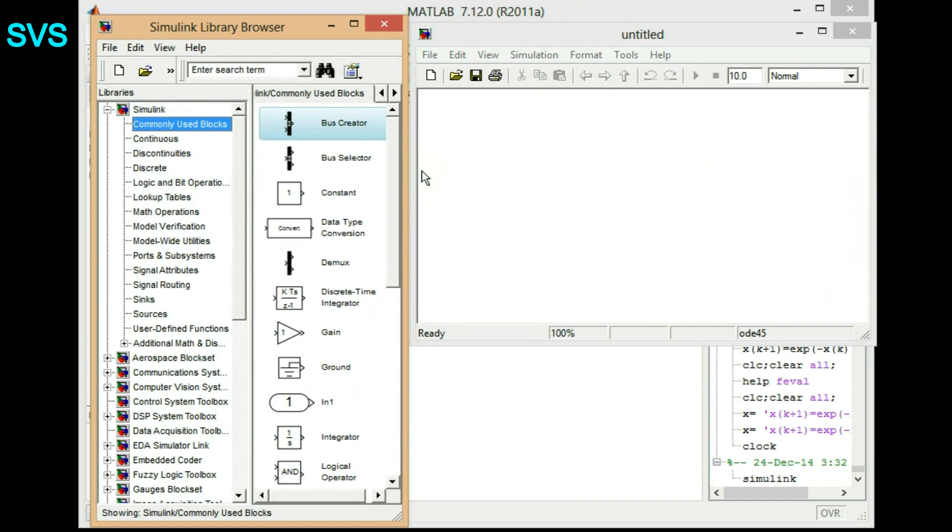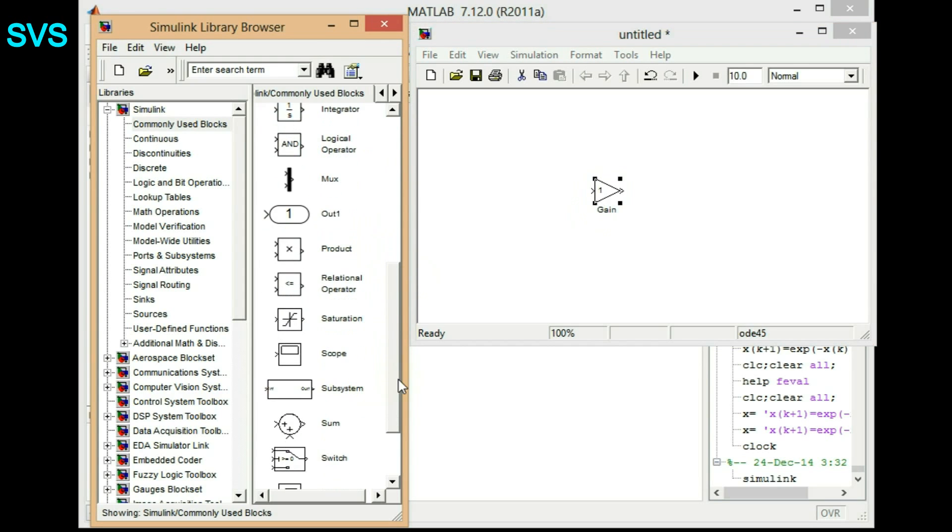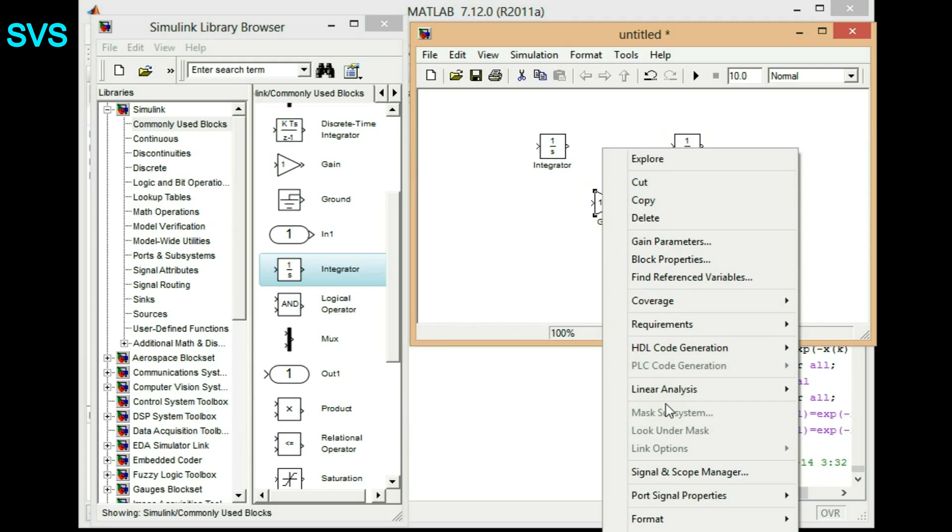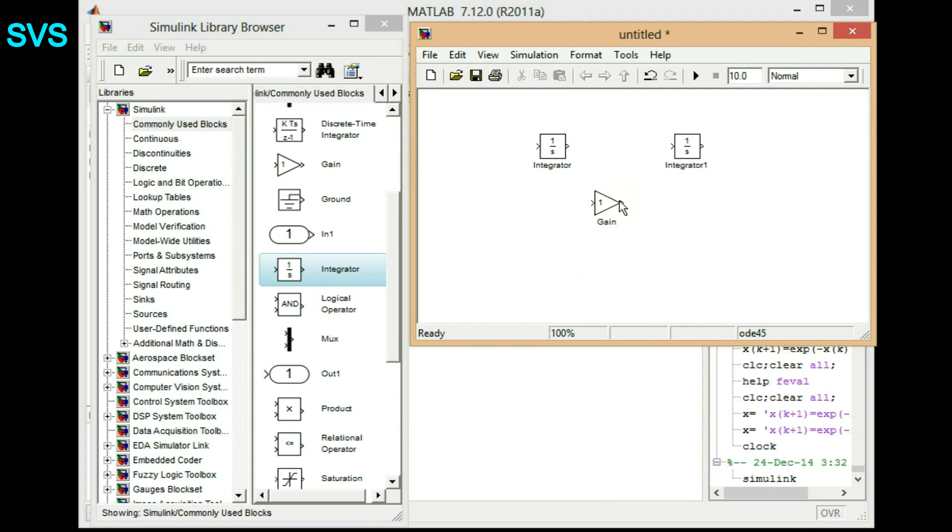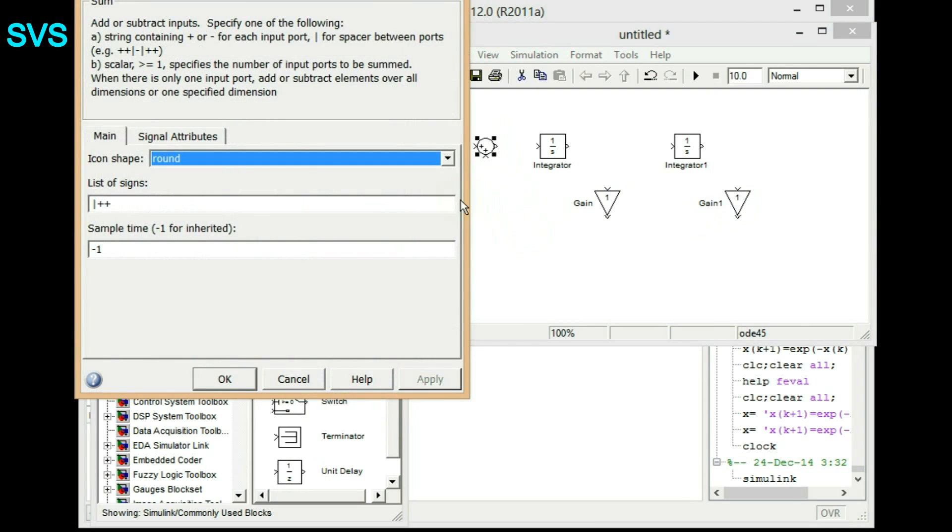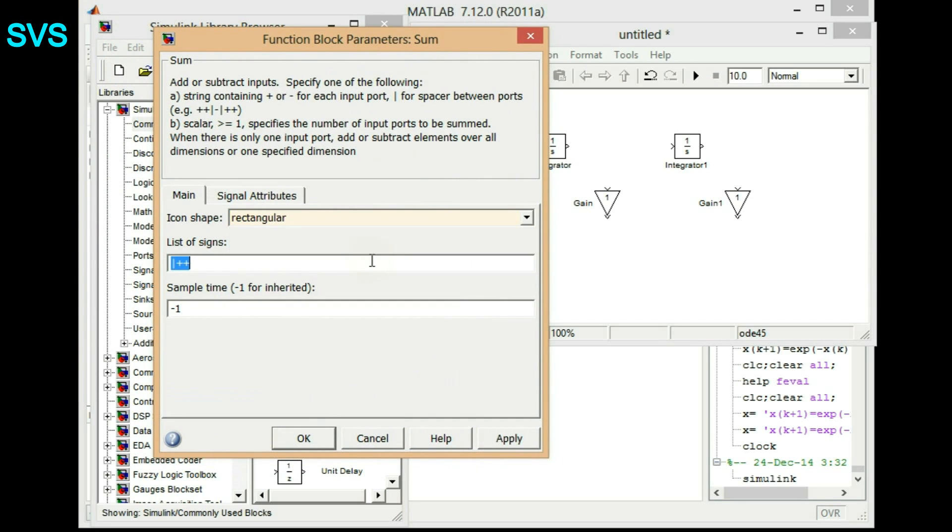So we'll serve on to two gain and two integrators. First integrator and the second integrator, and we'll just rotate it using Ctrl+R and we'll just right-click and drag it. We'll have multiple copies and then we'll choose gain because we want x2 dash as summation of two things.